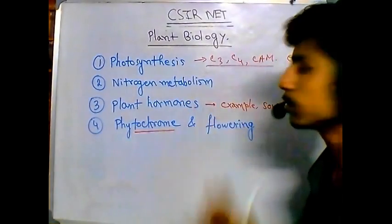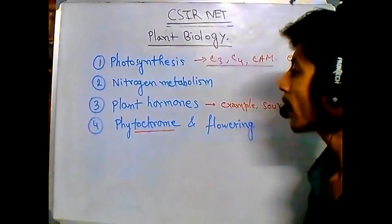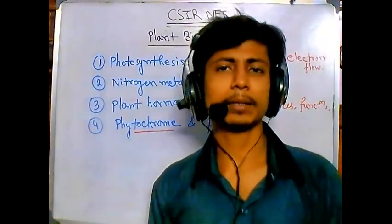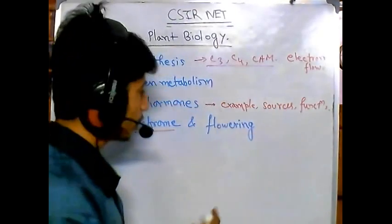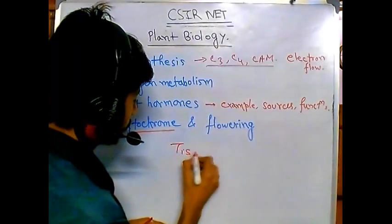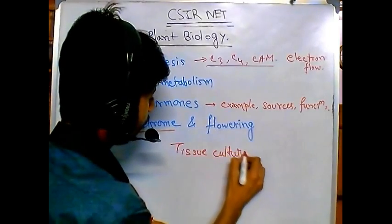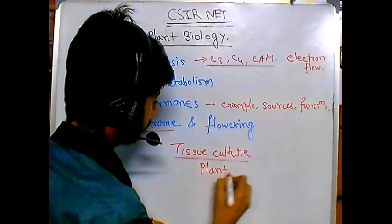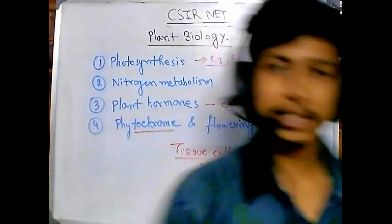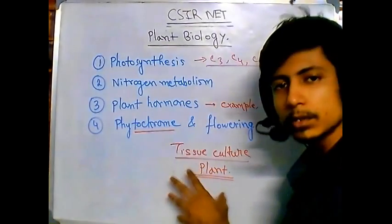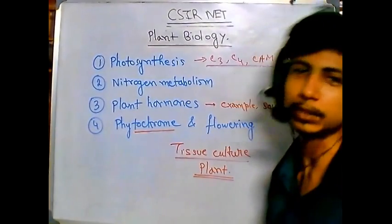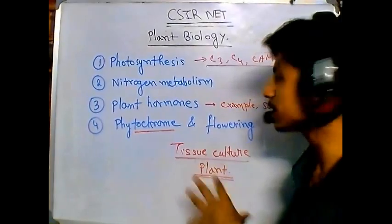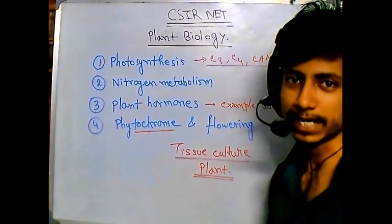These are the major topics in plant biology for CSINet. Plant morphology is not that important, but tissue culture is. Plant tissue culture is very very important — you need to learn its basics, the organizing concepts, and also Agrobacterium-mediated transformation, since these processes are related to the plant biology section. These are the things that are very important for CSINet.